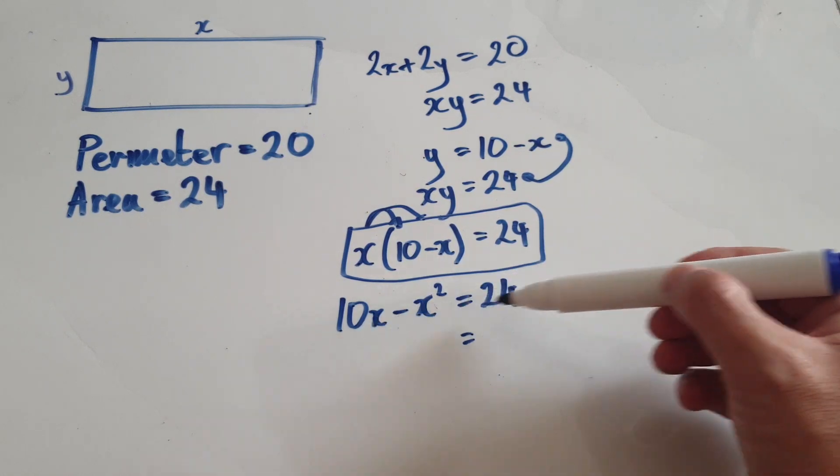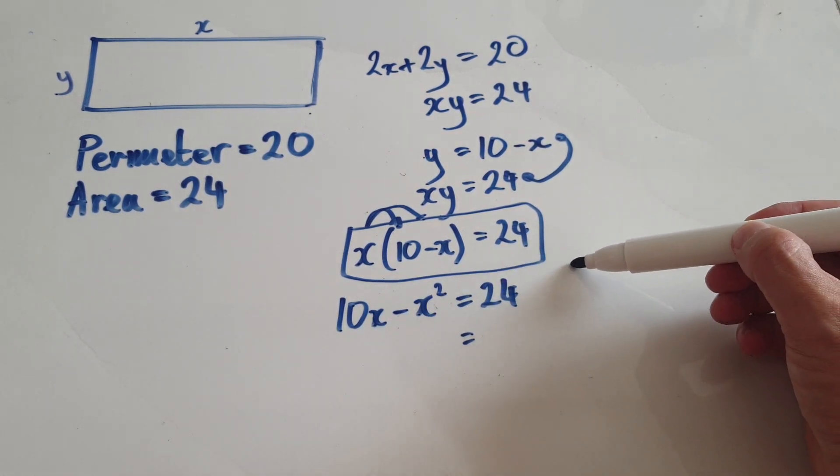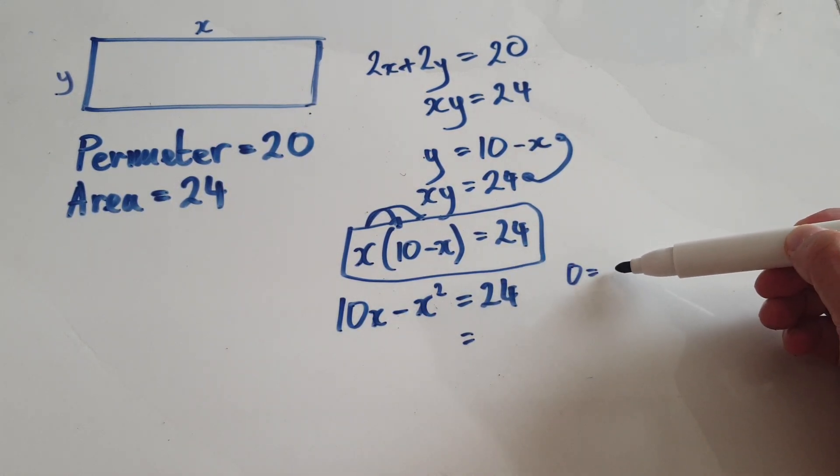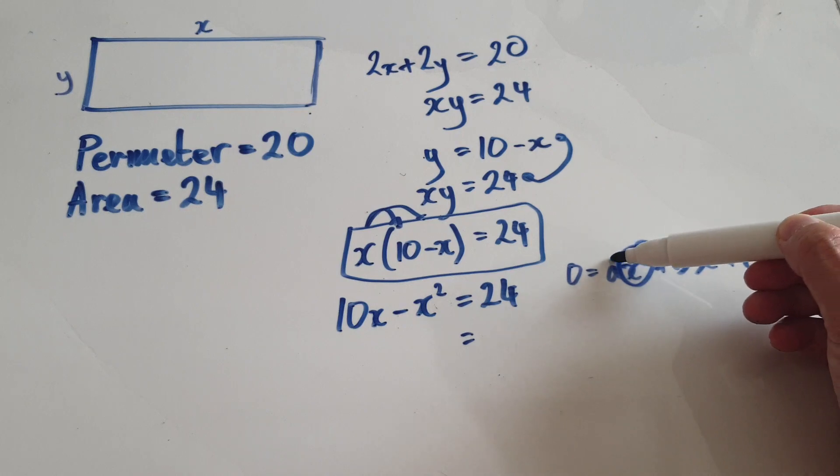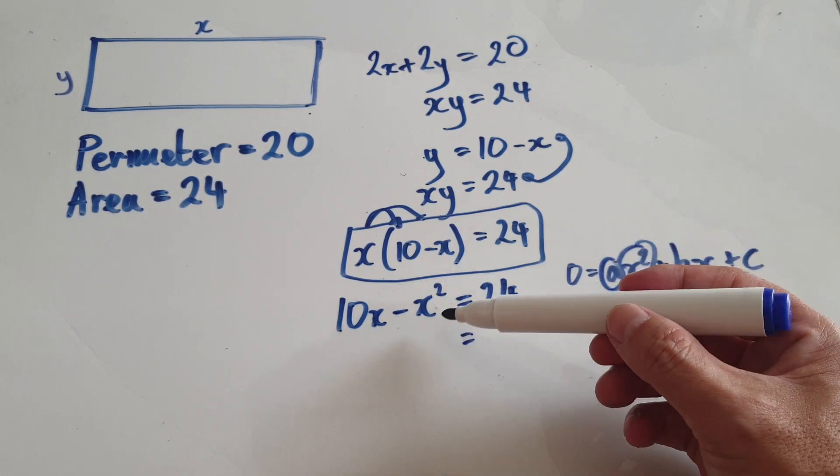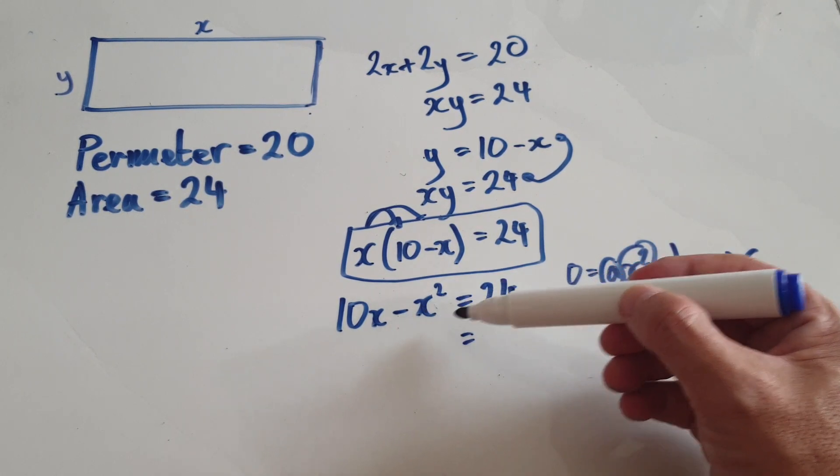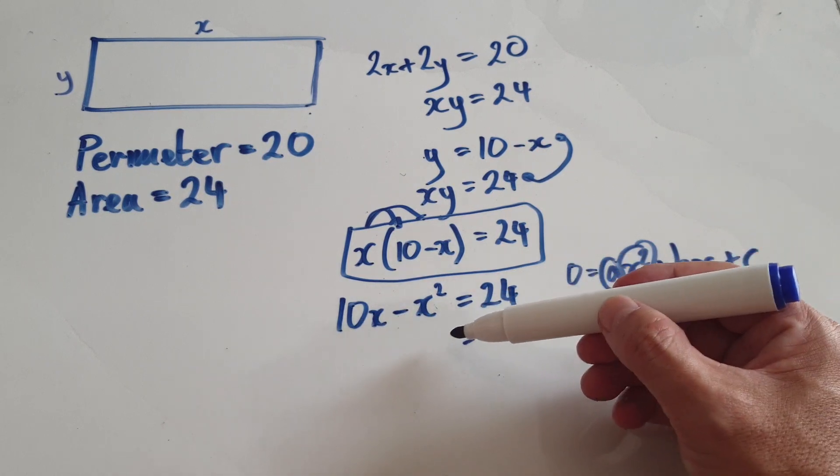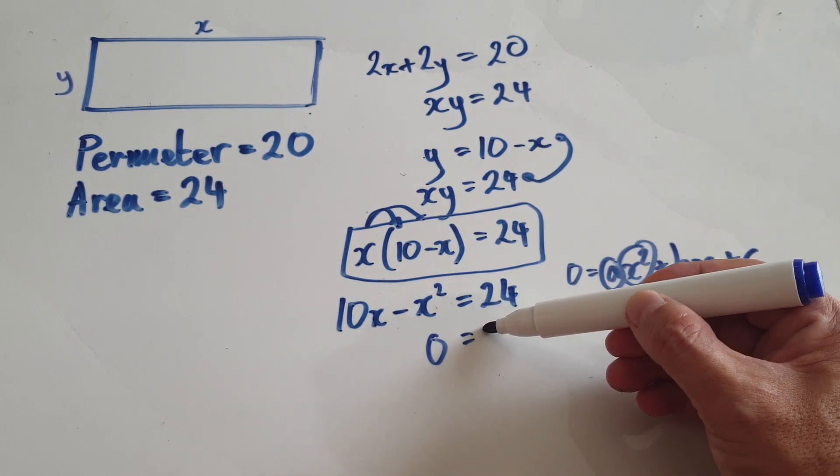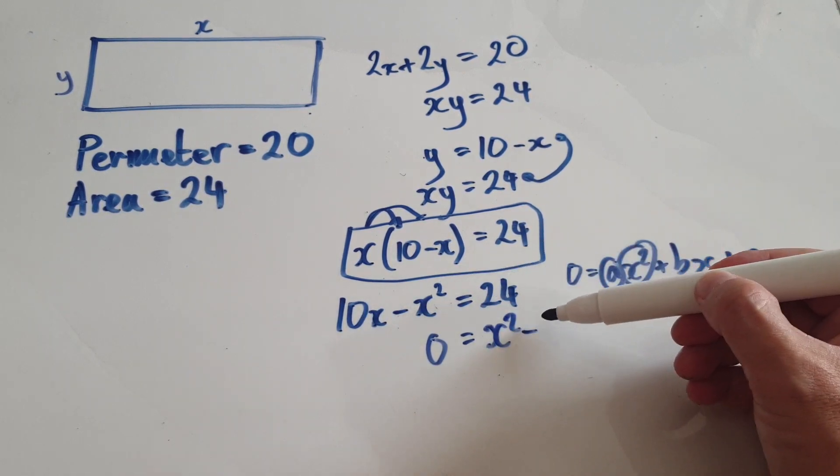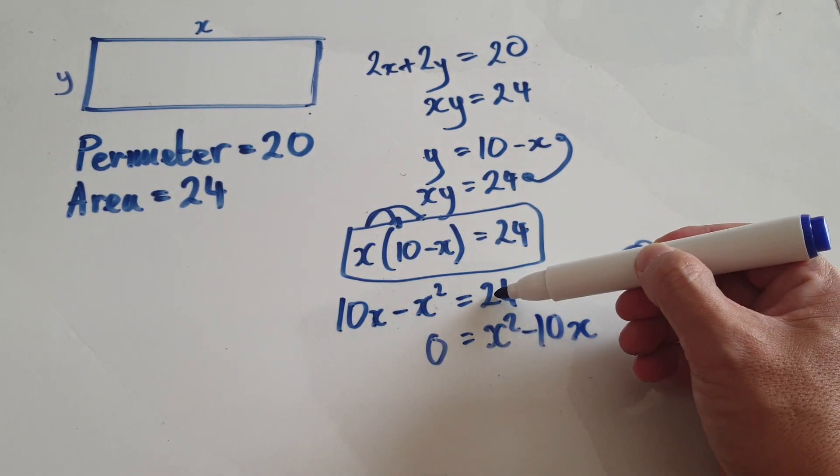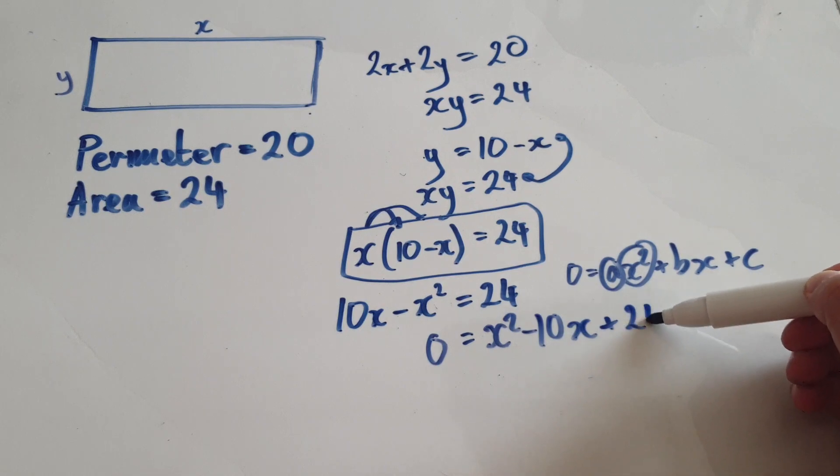So to solve a quadratic equation you need to get in the form of 0 equals ax squared plus bx plus c. You want the coefficient to be a positive. So let's add x squared, take away 10x from both sides. The left hand side will be 0, adding x squared will give you x squared, and then this will remain positive 24.